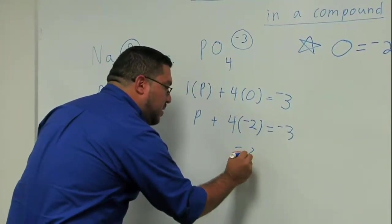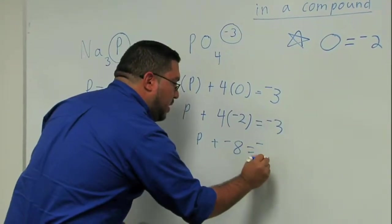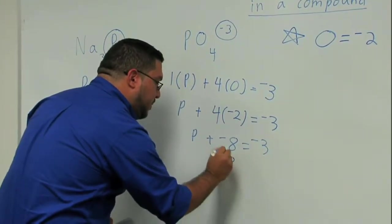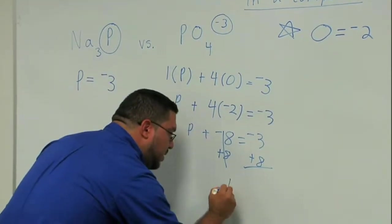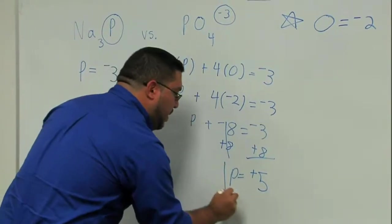Now I can just solve this like if it was a regular math problem. I have phosphorus plus four times negative two is equal to negative three. So let's just go ahead and solve for that. Four times negative two gives you negative eight plus phosphorus is equal to a negative three. Add eight to both sides. And we obtain phosphorus having an oxidation state of positive five.